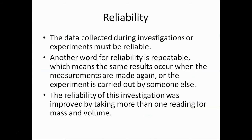There are a couple of things that we need to look at or think about when it comes to designing experiments. One is reliability. And what this means is that the data collected during an investigation or experiment must be reliable. Another word for reliability is repeatable, which means that the same result occurs when the measurements are made again or the experiment is carried out by somebody else. The reliability of this investigation was in fact improved by taking more than one reading for mass and volume. We could have worked out the density simply by getting one reading. But taking a series of readings, finding those occurred on a straight line, that ensured that the results were reliable.